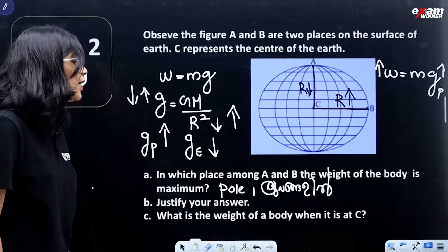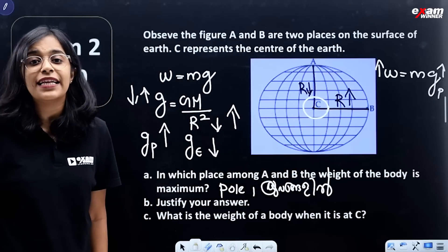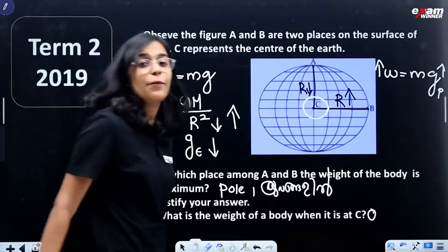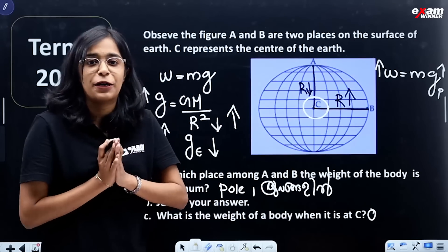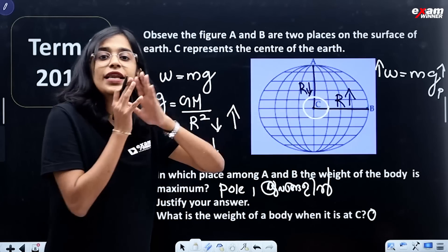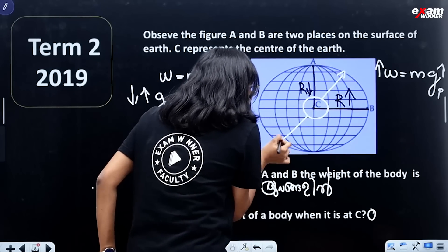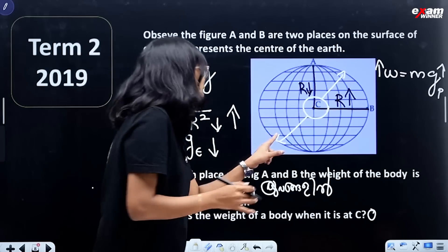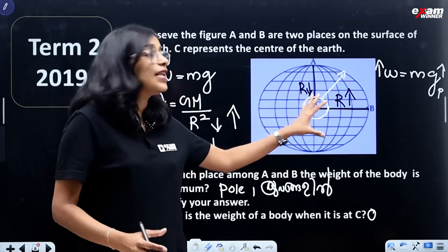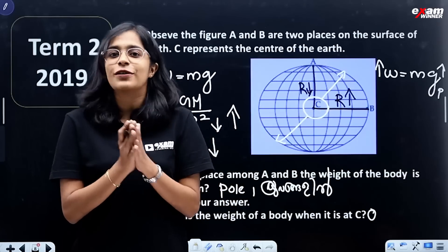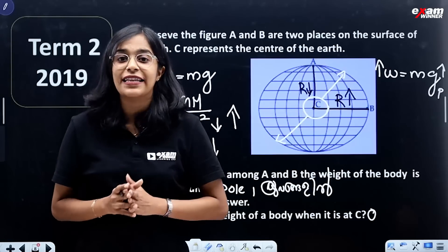What is the weight of the body when it is at the center of the Earth? The weight at the center is zero. When we look at the center, gravitational forces from all directions act in equal and opposite directions and cancel each other out. So there is no net gravitational force, and the weight comes out to zero.